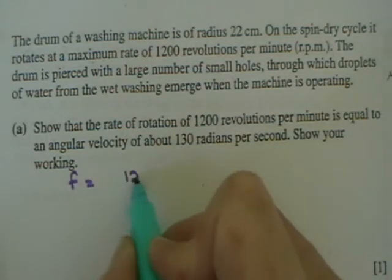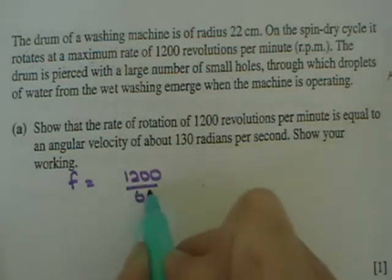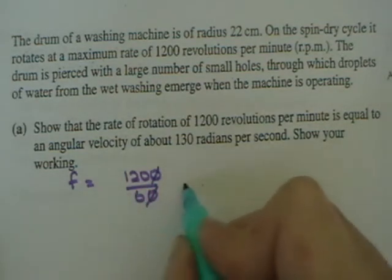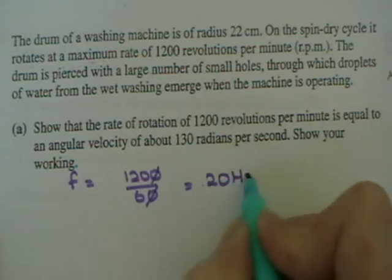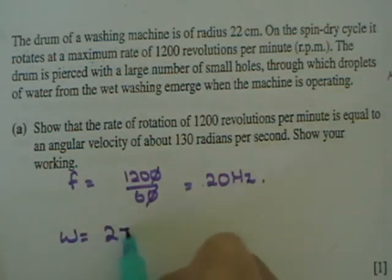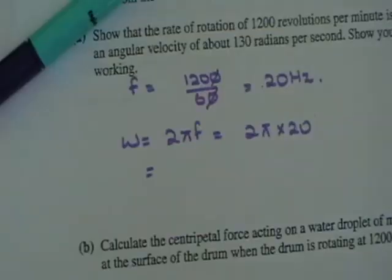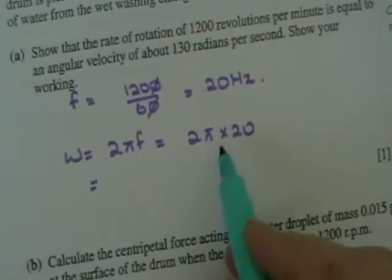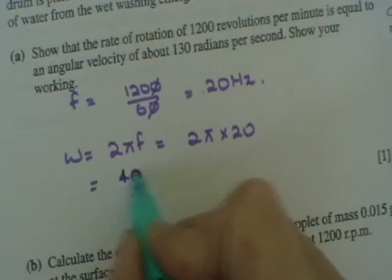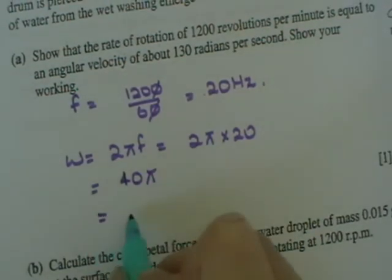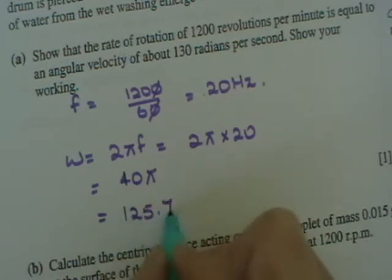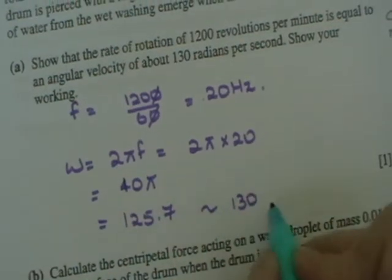So the frequency is going to be 1200 over 60, 60 seconds, which gives you 20 hertz. And then omega is equal to 2 pi f which equals 2 pi times 20. So the answer therefore is 40 pi radians per second or that works out to be 125.7 or 130 to 3 significant figures.